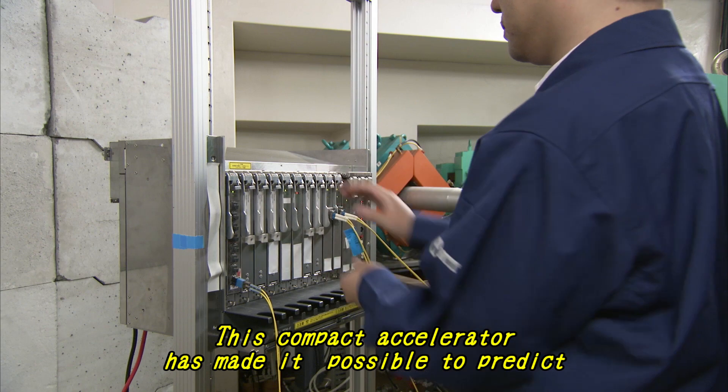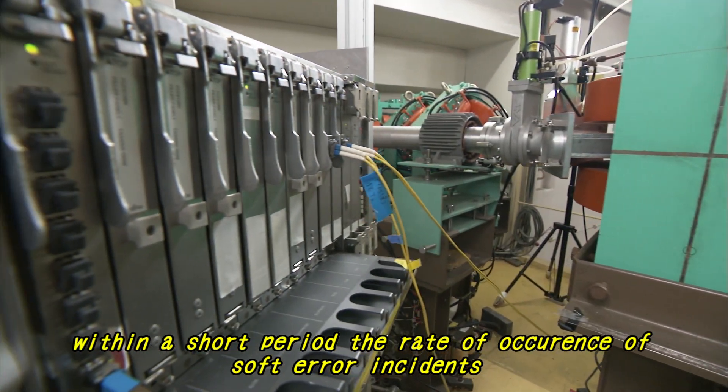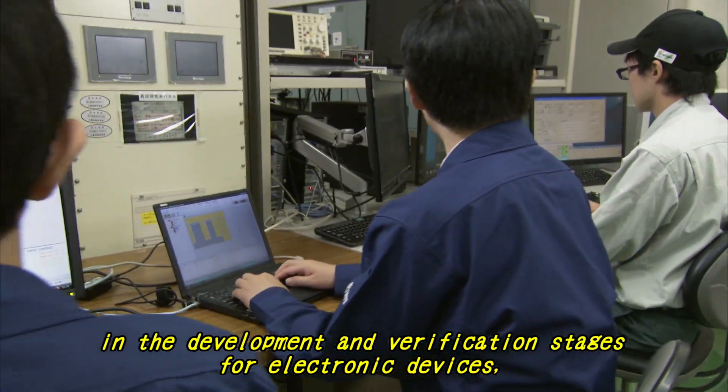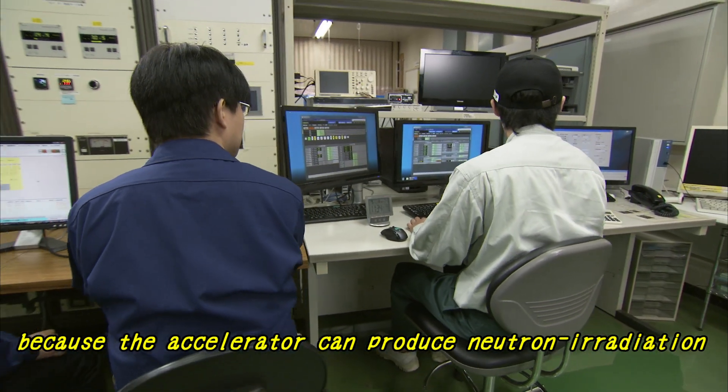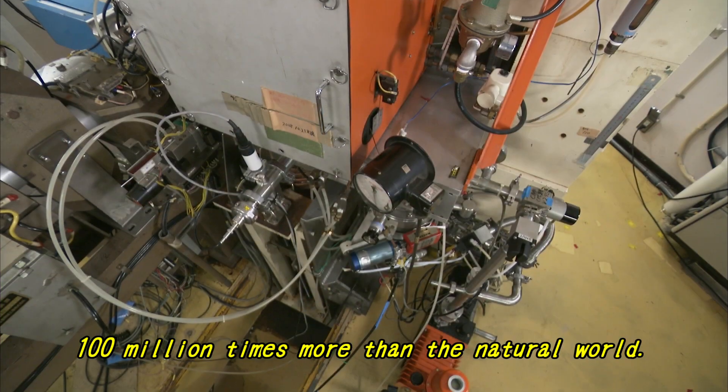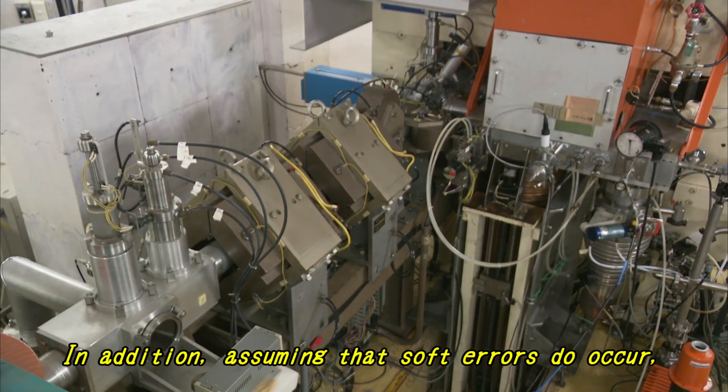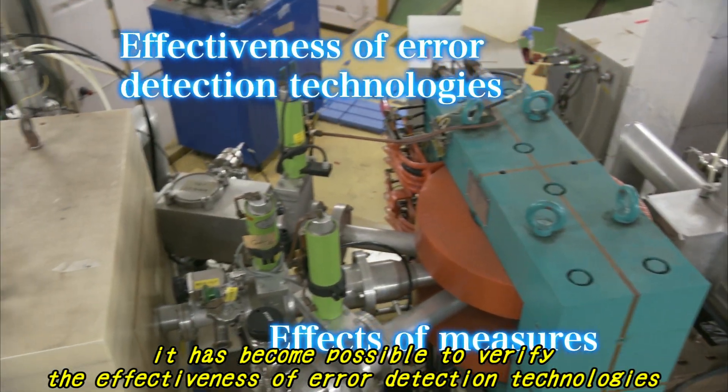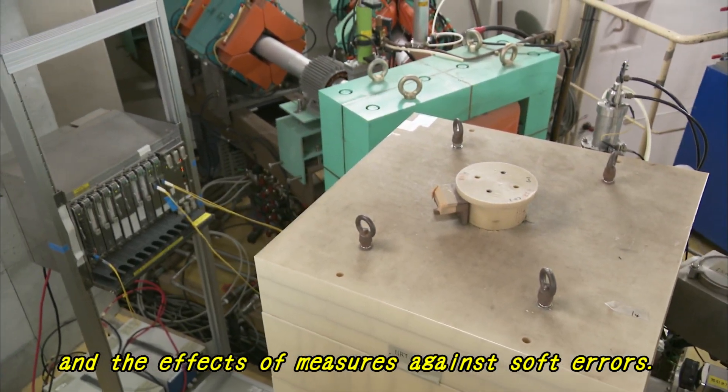This compact accelerator has made it possible to predict within a short period the rate of occurrence of soft error incidences in the development and verification stages for electronic devices, because the accelerator can produce neutron irradiation 100 million times more than the natural world. In addition, assuming that soft errors do occur, it has become possible to verify the effectiveness of error detection technologies and the effects of measures against soft errors.